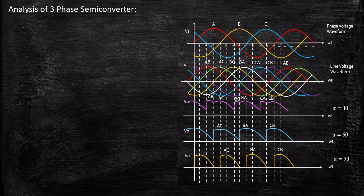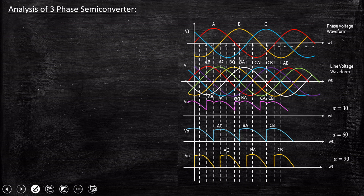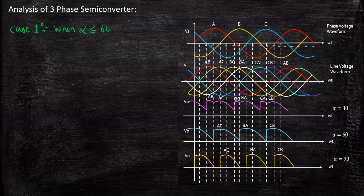This is the waveform of a three-phase semi-converter circuit, which we had seen in the previous video. In this video, we'll be focusing on the analysis part where we will be deriving the average and RMS output voltage for alpha less than 60 degrees and greater than 60 degrees — that is for continuous and discontinuous conduction modes. So let's get started with Case 1, that is when alpha is less than or equal to 60 degrees.